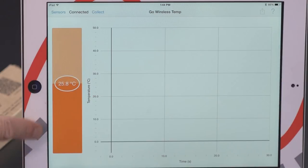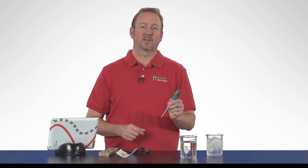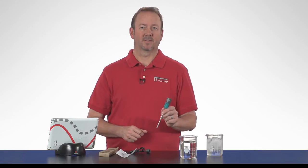Now you'll see on the left side of the display there is a bar meter showing the present reading of the temperature. Go Wireless Temp can read from minus 40 degrees C to plus 125 degrees C.